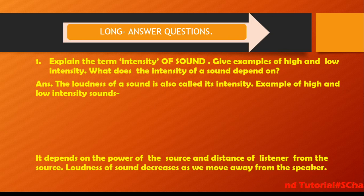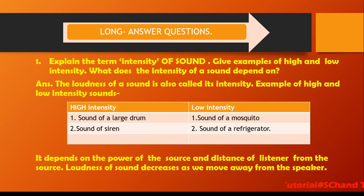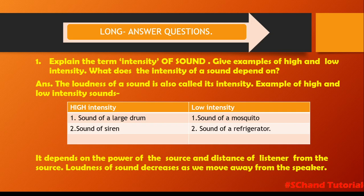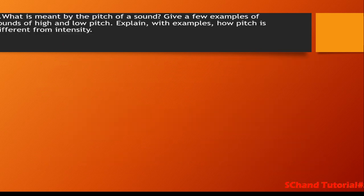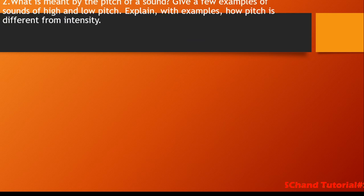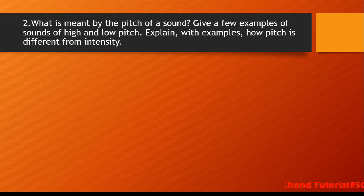Intensity of sound decreases as we go away from the source. Examples of high intensity sound are the sound of a large drum and the sound of a sigh. Examples of low intensity sound are the sound of a mosquito and the sound of light graphics or writing.